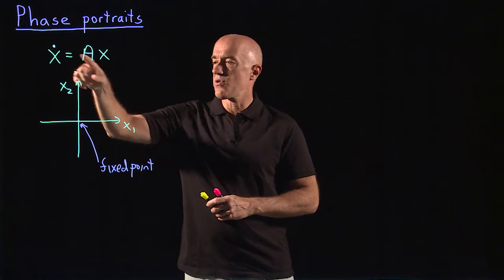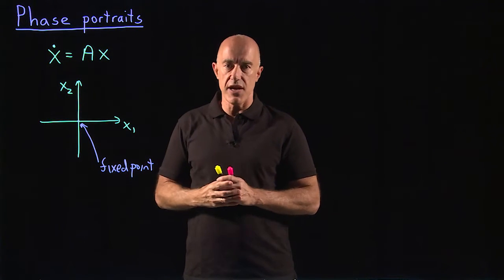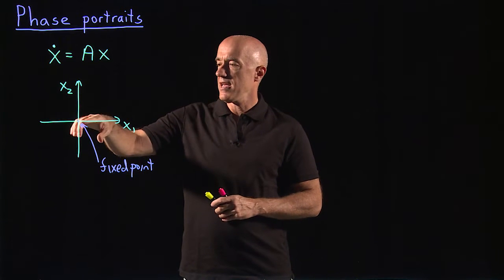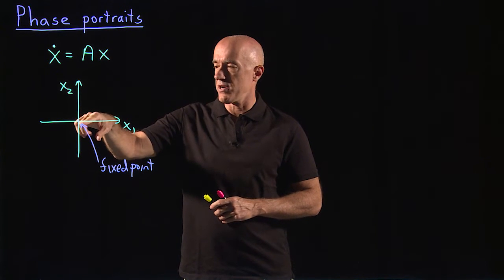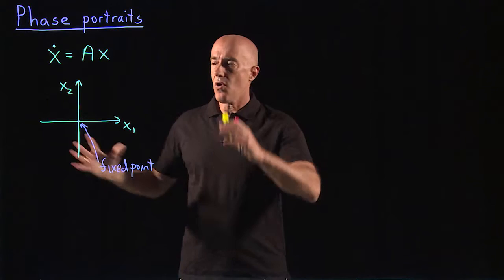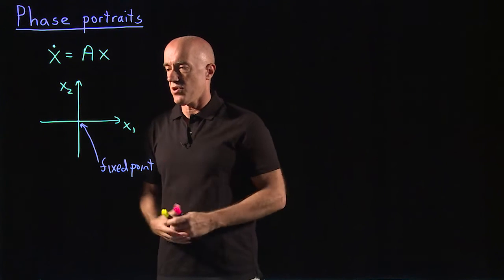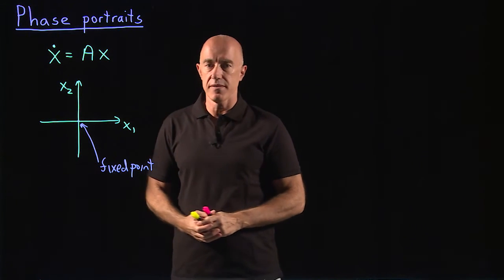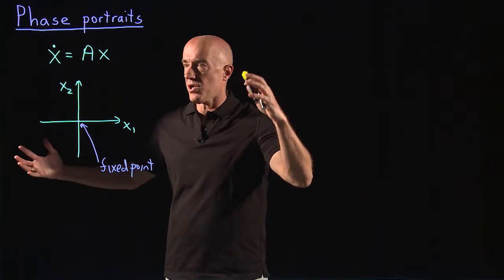Because this is a linear equation, it doesn't matter whether you're near or far from the equilibrium. If this fixed point or equilibrium is stable, all solutions will then converge onto the fixed point. Unstable, they will all run away.